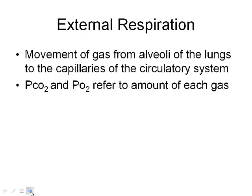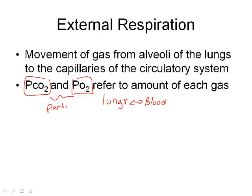The movement of gas from the alveoli to the capillaries of the circulatory system is external respiration. We breathe in air, and here are our lungs and our blood going back and forth — that's what external respiration is. PCO2 and PO2 refer to the partial pressures of these two gases. The partial pressure determines which direction they're going to flow. You can think of PCO2 and PO2 as basically meaning how much of each gas there is.